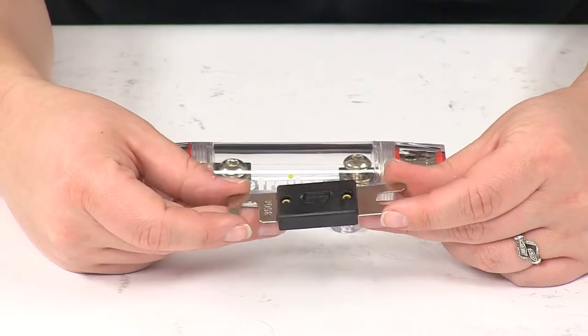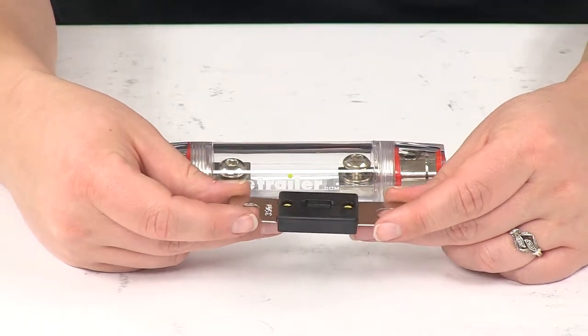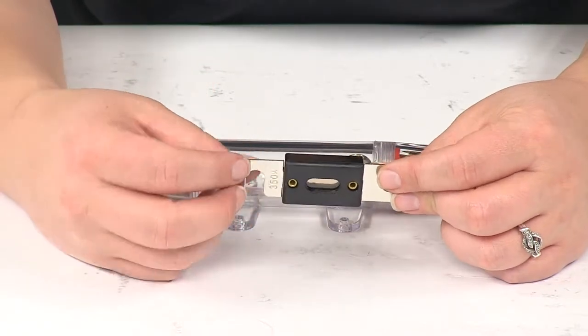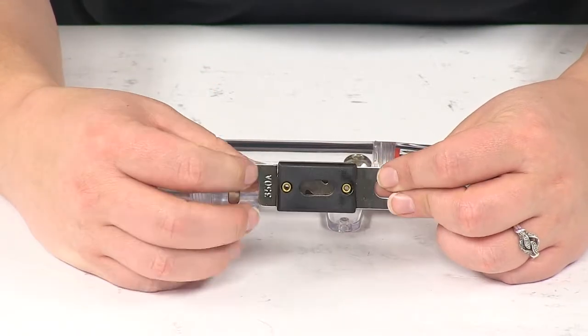The 350 amp fuse is going to prevent your Bulldog winch from overheating since this is going to connect between your motor and your vehicle's positive battery lead.